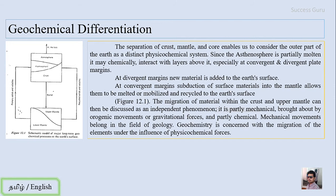The migration of material within the crust and upper mantle can be discussed as an independent phenomenon. It's partly mechanical, brought about by orogenic movement or gravitational forces, and partly chemical. The mechanical movement belongs to the field of geology and the geochemist is concerned with the migration of elements under the influence of physicochemical forces.